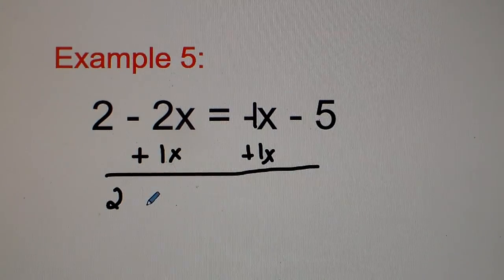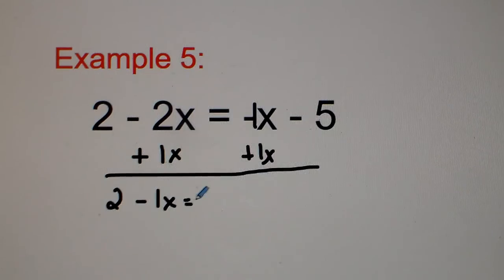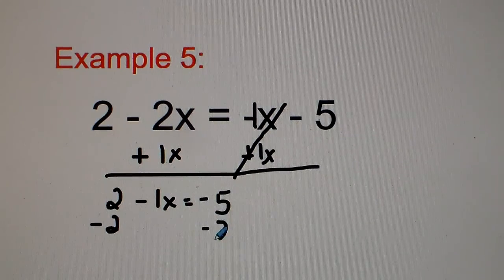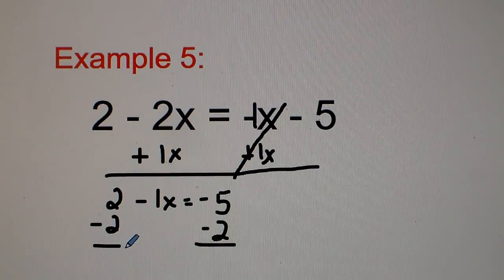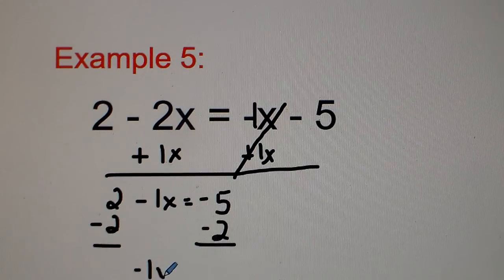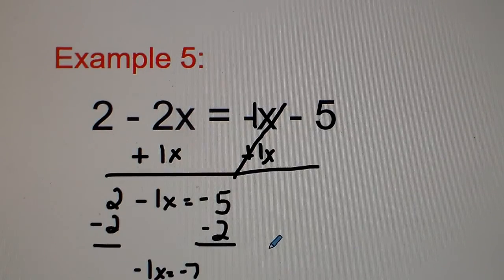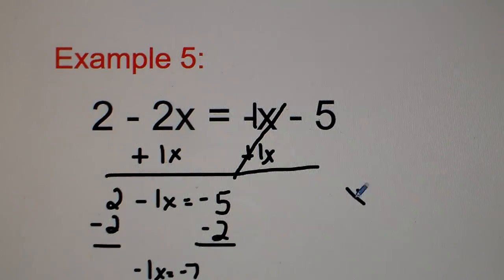For example number 5, we move the negative 1x to the other side by adding 1x. So we get 2 minus 1x equals negative 5 — the negative 1x and positive 1x cancel out. The opposite of plus 2 is minus 2, so I subtract 2 from both sides. We get negative 1x equals negative 7, because negative 5 minus 2 gives negative 7. Divide both sides by negative 1 and we get x equals 7.